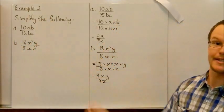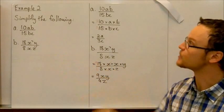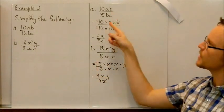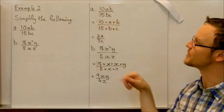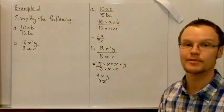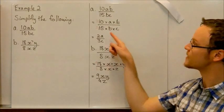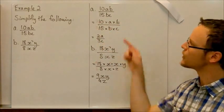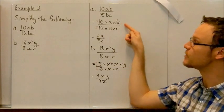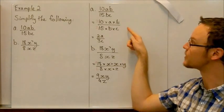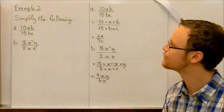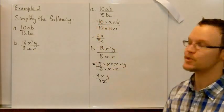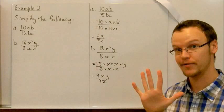Here are our second examples. We've got two examples here. The first one, we can expand out to write 10 times a times b, and the bottom is 15 times b times c. The common factors we have, the common variables between the numerator and denominator, b, so they are going to cancel once again because they equal 1. Here there is a common factor between 10 and 15 of 5.